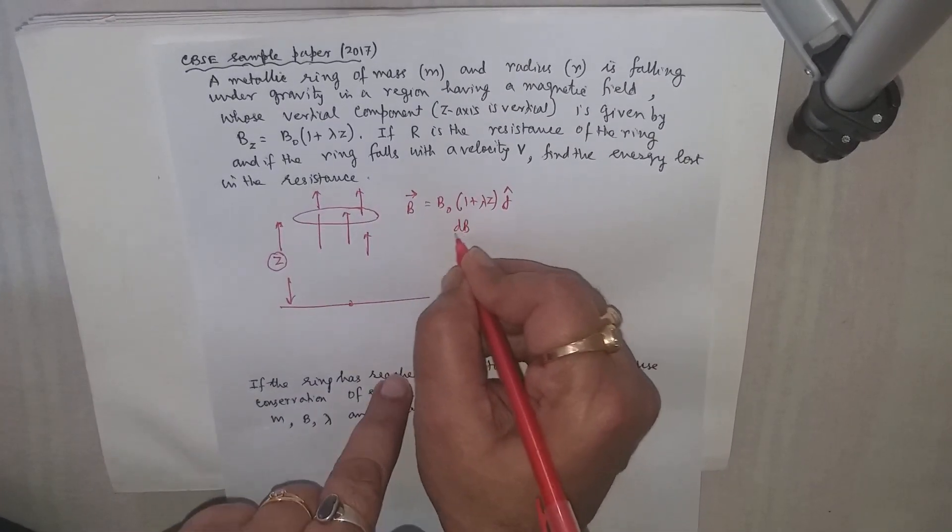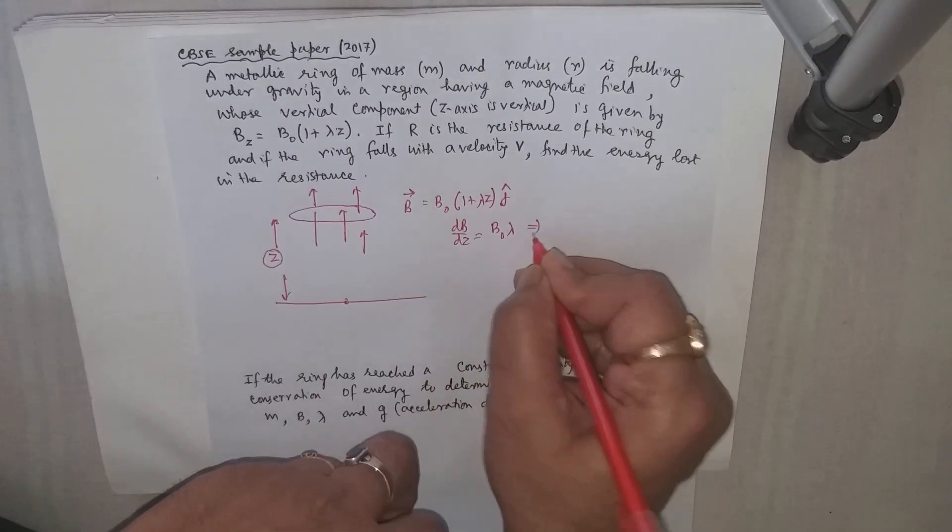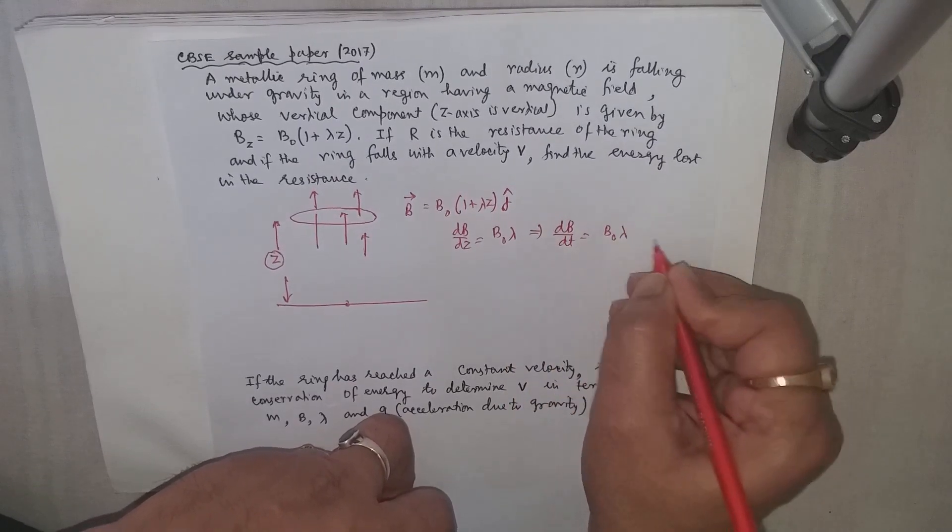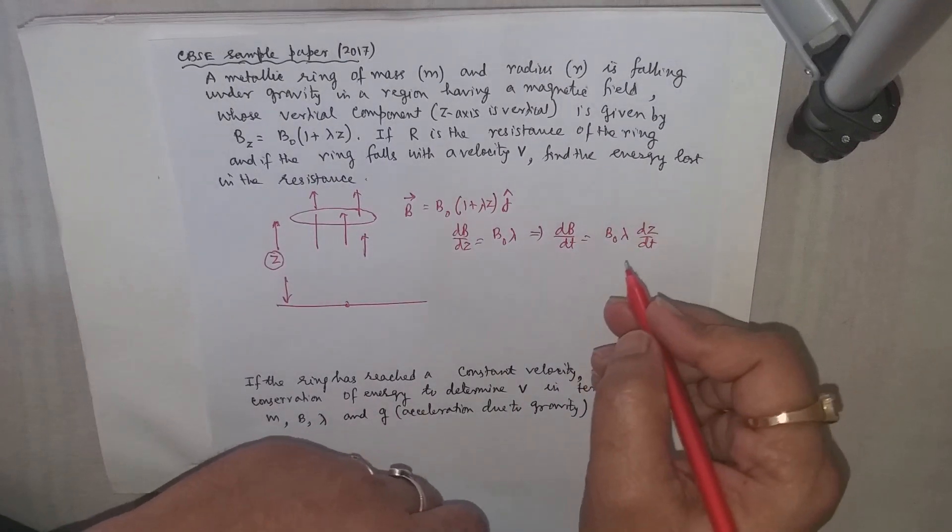Let's see, dB/dz will be equal to B₀λ. Therefore dB/dt will be equal to B₀λ dz/dt.